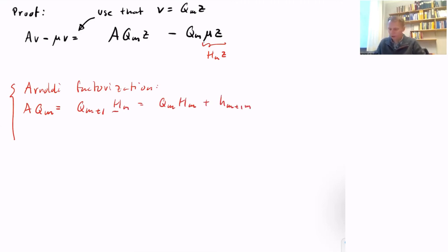We're now going to use the Arnoldi factorization, which you've seen maybe in this form: AQ equals QH. We're going to use a slight variation where we expand the last column and last row of H_M.